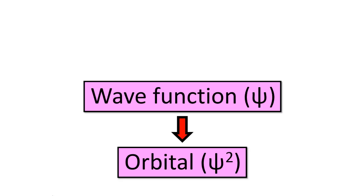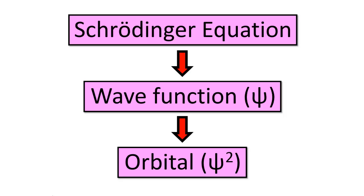Now before we get into the specific shapes, let's go ahead and remind ourselves what an orbital actually is, because it's very easy for us to climb deep down into the rabbit hole without truly understanding anything about what we're talking about. The orbital is a three-dimensional plot of the wave function of the electron squared. The wave function, psi, is a super complicated mathematical function that describes the wave-like behavior of the electron, and it's derived by solving the Schrodinger equation for the atom of interest.